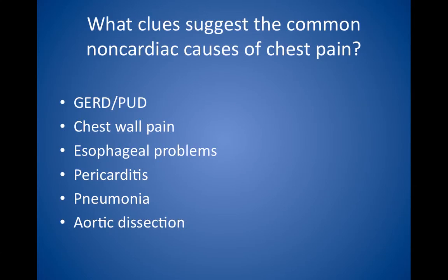For pneumonia, chest pain is caused by pleuritis. Patients also have cough, fever, and/or sputum production. Ask about possible sick contacts. Aortic dissection is associated with severe tearing or ripping pain that may radiate to the back. Look for a history of hypertension or evidence of Marfan syndrome, such as a tall, thin patient with hyperextensible joints. Blunt chest trauma can cause aortic laceration and pseudoaneurysm, which are different conditions that are often managed similarly.